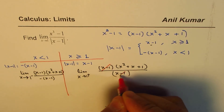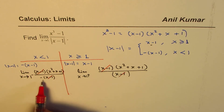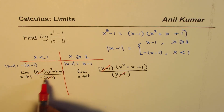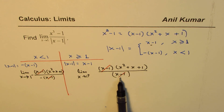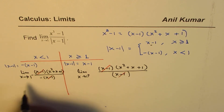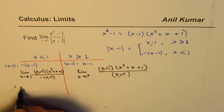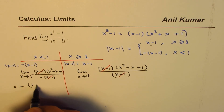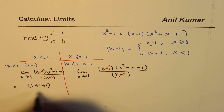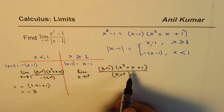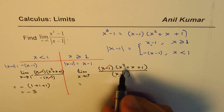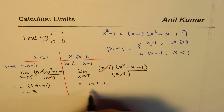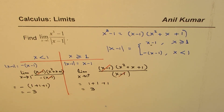We can cancel x minus 1 from numerator and denominator. From the left side we are left with a negative value, and from the right side a positive value. Substituting x equals 1 from the left gives negative of 1 squared plus 1 plus 1, which is negative 3. From the right side, substituting x equals 1 gives 1 plus 1 plus 1, which equals positive 3.